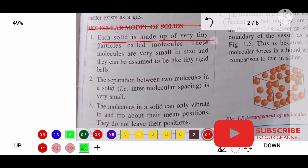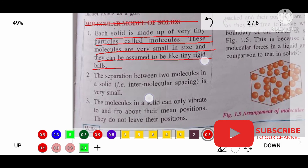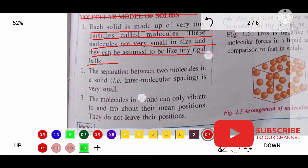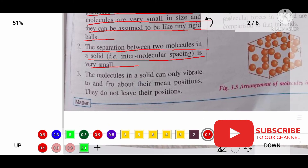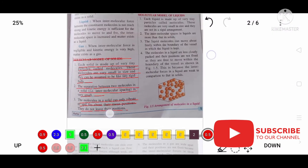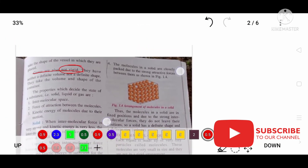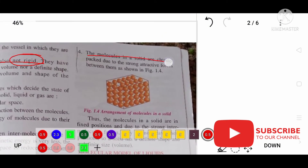Each solid is made up of very tiny particles called molecules. These molecules are very small and can be assumed to be like tiny rigid balls. In a solid, the separation between two molecules is very small — there is almost no intermolecular space. The molecules in a solid vibrate to and fro about their mean position but do not leave it; they have a fixed position.